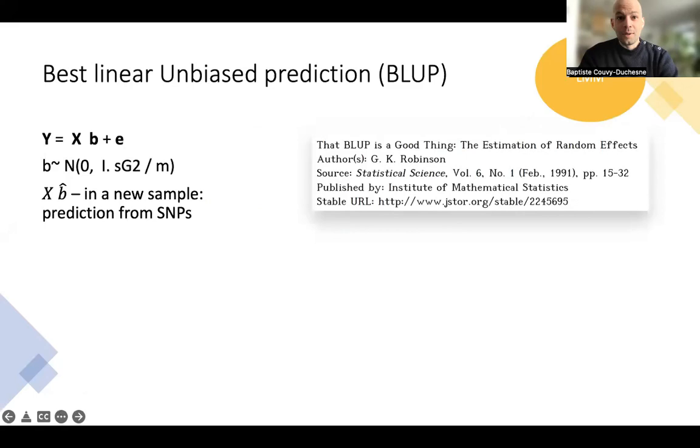The first one being Best Linear Unbiased Prediction called BLUP. BLUP, especially in genetics, was introduced by Robinson in one of these several papers, but this one is actually a pretty good read. That BLUP is a Good Thing. The model formulation—we recognize here a linear mixed model again. Y equals XB plus e. The idea here is to take the estimates of beta, beta hat, times that by a new SNP matrix X from a new sample to derive a SNP-based prediction. So that's the idea behind BLUP.